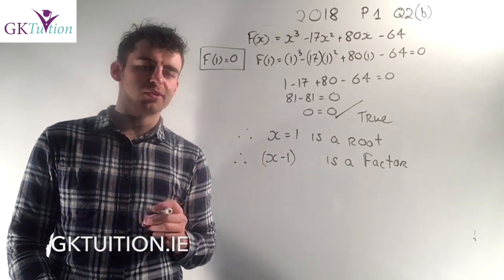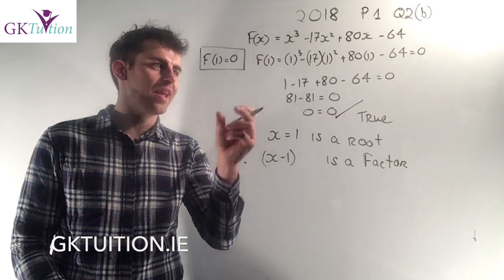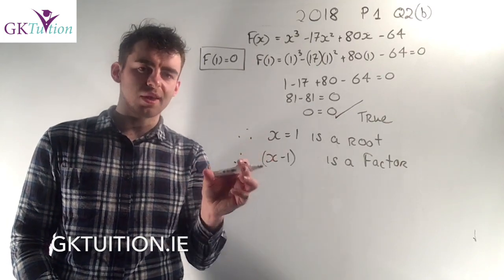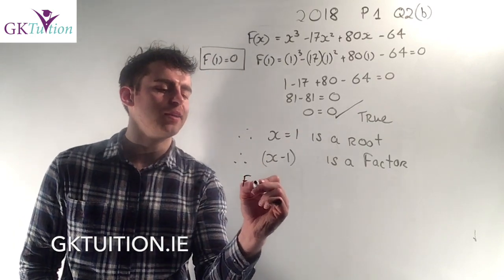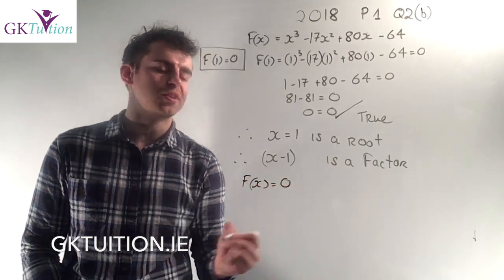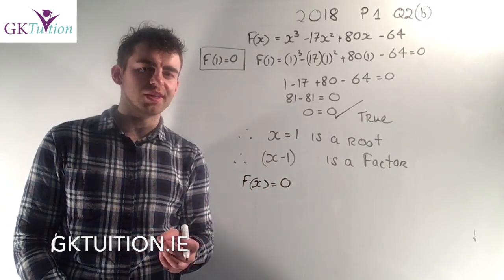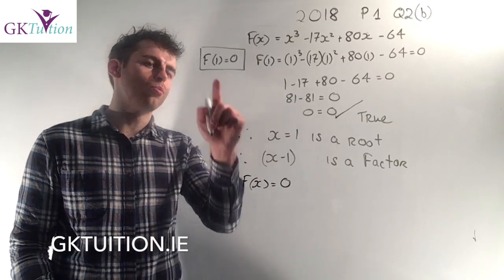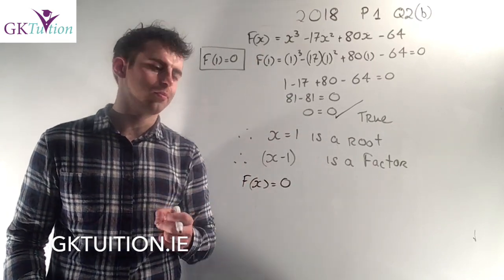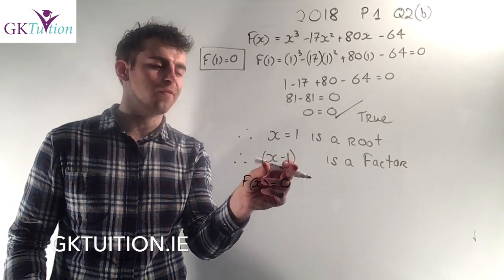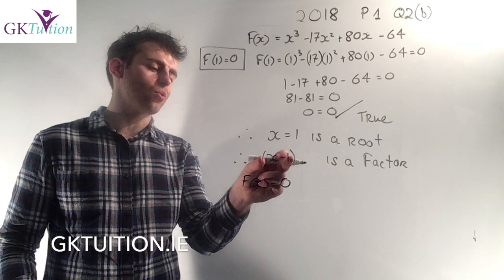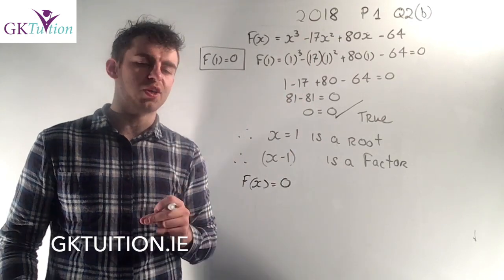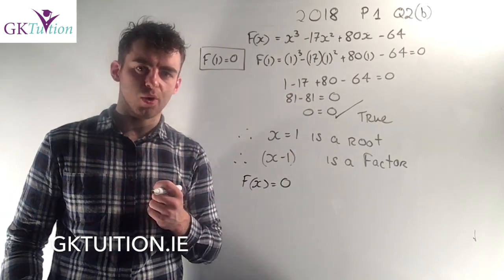Now that you know x minus 1 is a factor, you can answer the next part of this question. They asked you to find another value for which f of x equals zero. In other words, they're asking you to find another root. If you know that x minus 1 is a factor, you can find the other root by just long division. So the next part of this question we're going to divide x minus 1 into this cubic to get the other roots of the equation.